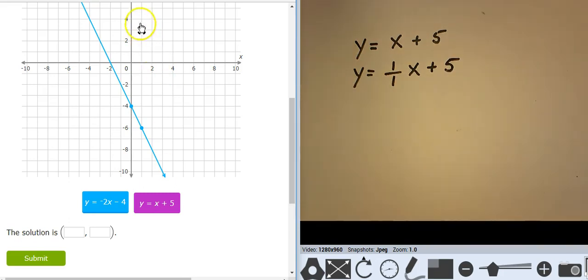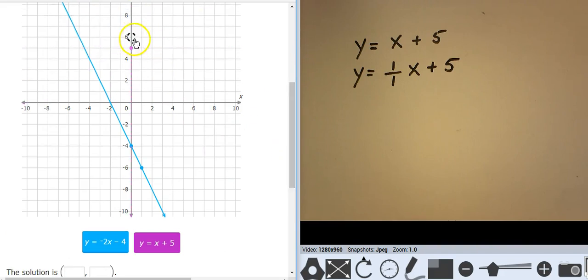So the equation is y equals x plus 5. Well, that's y equals 1 over 1x plus 5. Here is the intercept, and here's the rise and the run. So I'm going to start at 5, and then go up 1 over 1. There it is. And it looks like everything is coming together right here at negative 3, comma, 2.